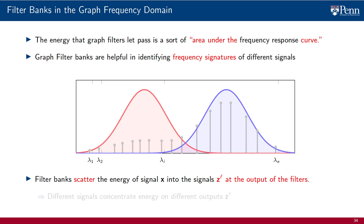The effect of a graph filter bank is to scatter the energy of the signal onto different outputs z^f, as different filters pick up energy concentrated in different GFT components. This allows filter banks to pick up different signatures by concentrating energy on different outputs, making signal detection elementary — just identify the filter that has accumulated more energy. In this example, the two filters scatter energy by letting pass low-frequency or high-frequency components, permitting elementary separation between signals with energy concentrated in low versus high frequencies.